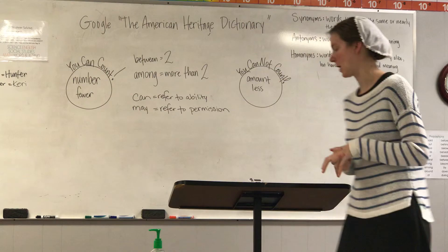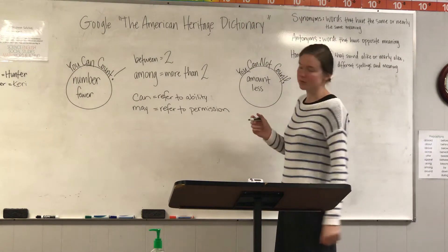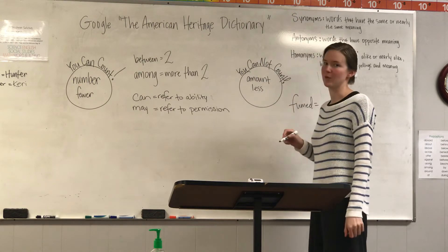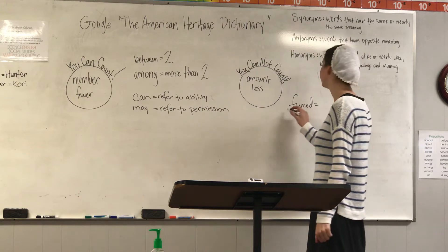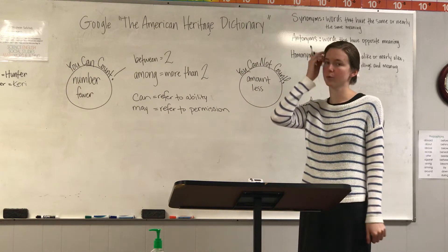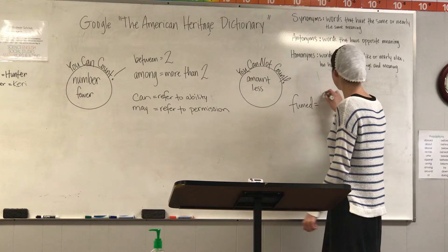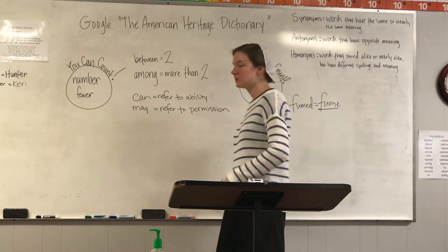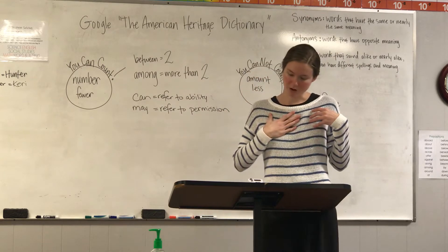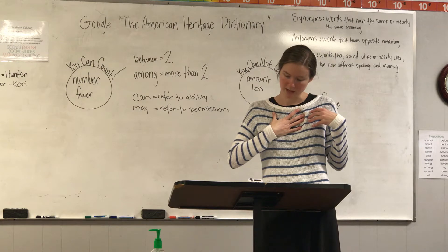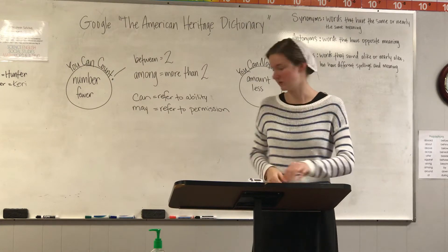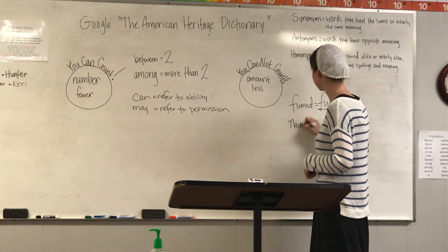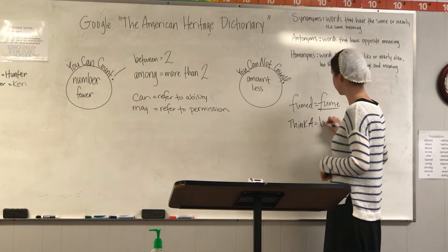Let me give you an example. The word that's underlined in number one is 'fumed.' What is the root word that we would look up in the dictionary? We cannot find 'fumed' in the dictionary — we have to find the root word. The root word of 'fumed' is 'fume.' For Think A, you must use book dictionaries.